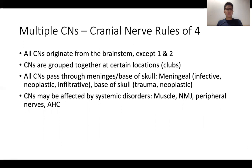The cranial nerve rules of four state: first, all cranial nerves originate from the brainstem except CN1 and 2, so a brainstem pathology can cause cranial nerve deficits. Second, cranial nerves are grouped together in certain locations called CLAPS. Third, all cranial nerves pass through the meninges and base of skull — leptomeningeal disease such as infection, neoplastic or infiltrative disorders can cause skipped cranial nerve lesions, and base of skull trauma or neoplasm can do the same. Finally, systemic disorders including muscle, NMJ, peripheral nerve, and anterior horn cell disease can also cause cranial nerve deficits.